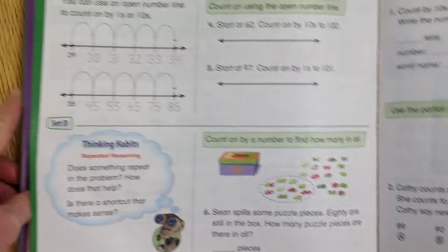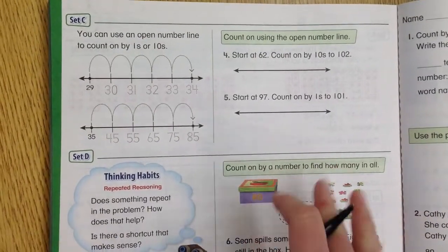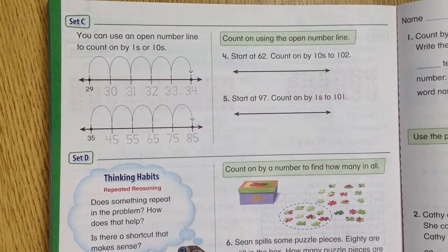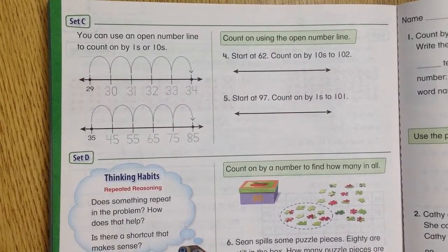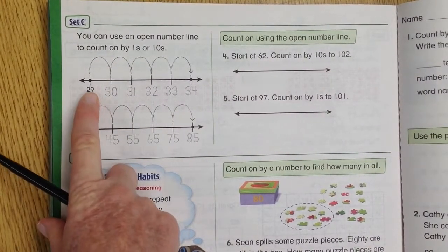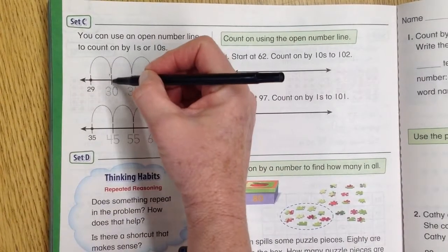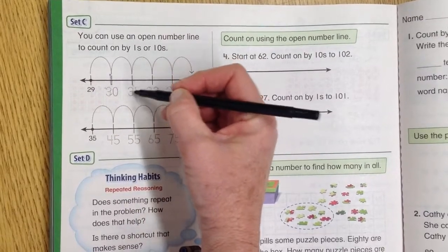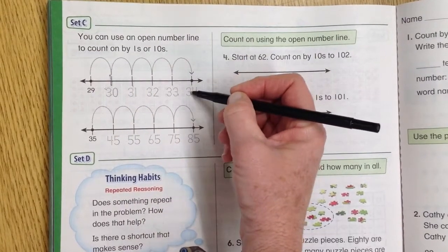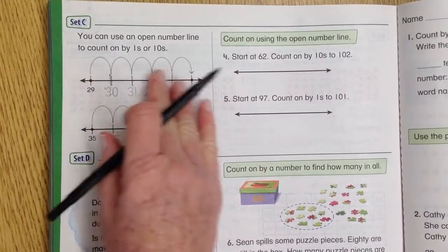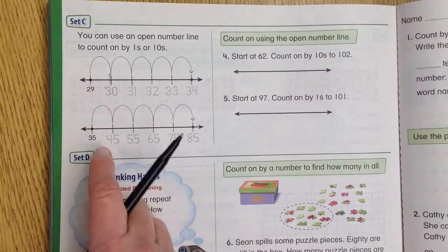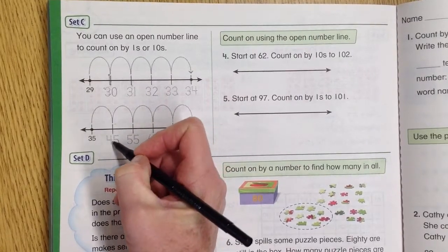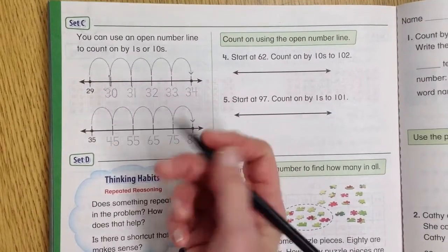All right, on page 440, they're using what's called an open number line, which means you can write in what you need to. So here starting at 29, if we're supposed to count by ones, we can draw the next one. We can start at 29, 30, 31, 32, 33, 34. If we're counting by tens, we can just put the next one. Here we start at 35, so it's going to become 45, 55, 65, and on.